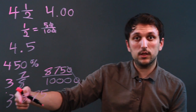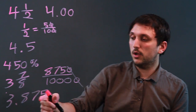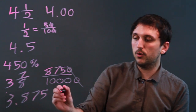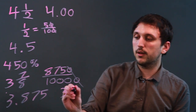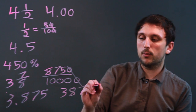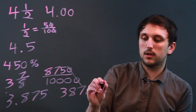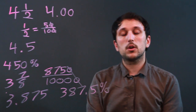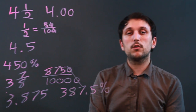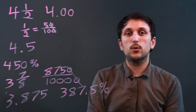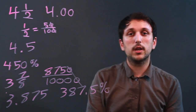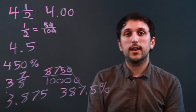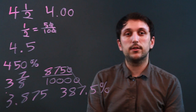And if we wanted to make this a percentage, again we multiply by 100, we move 2 over, so we get 387.5%. So I'm Charlie Kasov, and you just learned how to change a mixed numeral into a decimal and a percentage.